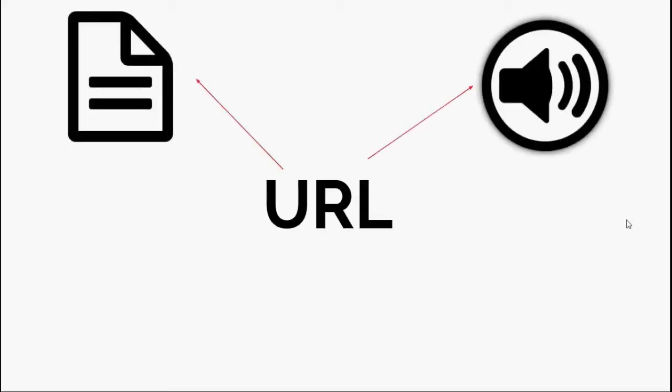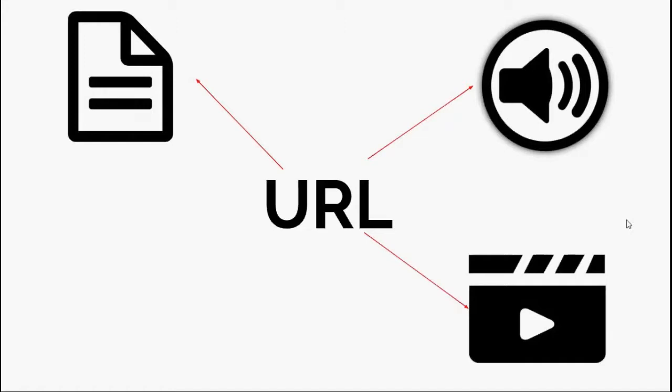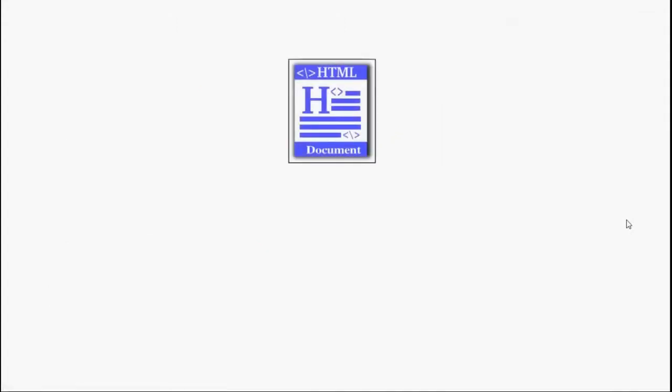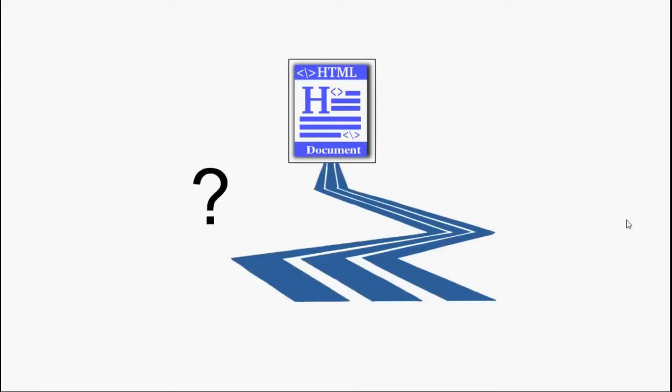A resource can be a file, an audio, a video, or in more complex terms it can be a database query. For example, if a URL is pointing to an HTML file, you locate it through a path — similar to a file path on your computer, but the file resides in some other computer.